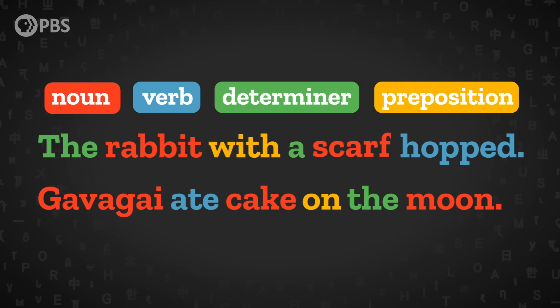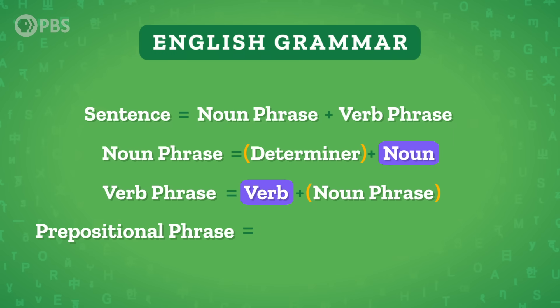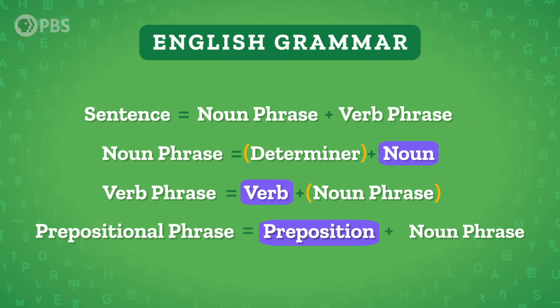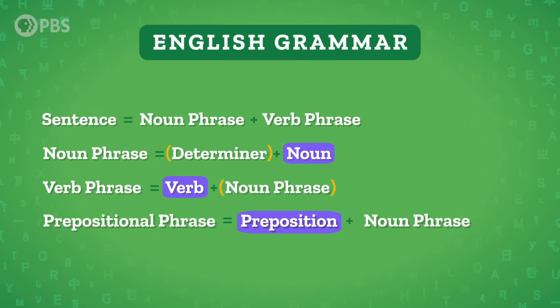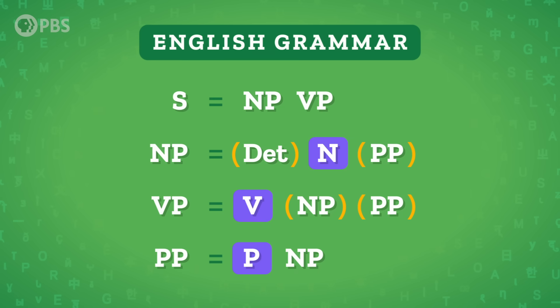There are plenty more things that we can add to a sentence, which starts to make a grammar even more complicated. For instance, take these: 'The rabbit, with a scarf, hopped' and 'Gavagai ate cake on the moon.' We've added two new phrases — 'with a scarf' and 'on the moon.' These phrases contain a determiner and a noun, but they also contain a preposition, a word that shows the relationship of the noun phrase to the rest of the sentence. So now we can make a rule for a prepositional phrase, which contains a preposition as the head and a noun phrase as the complement. We also need to refine our rules for noun phrases and verb phrases to allow for optional prepositional phrases.